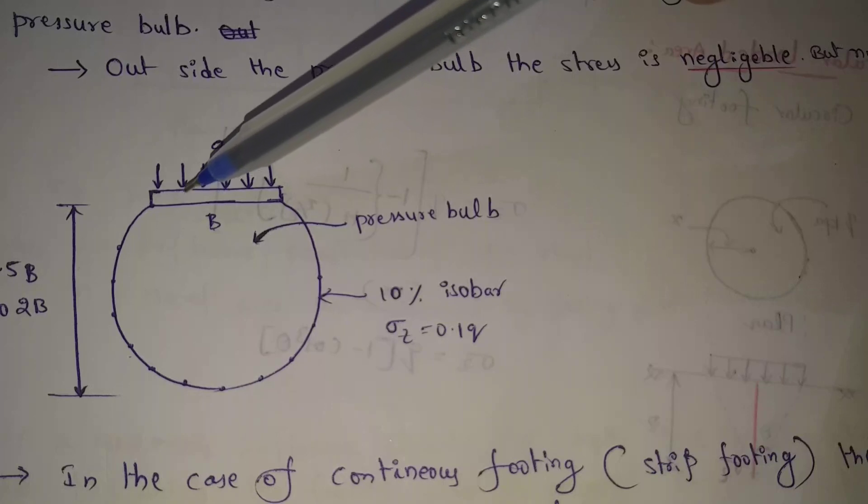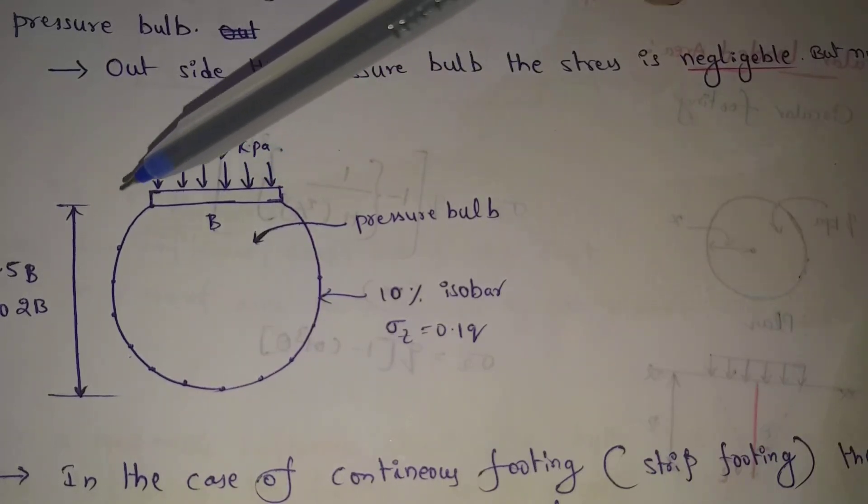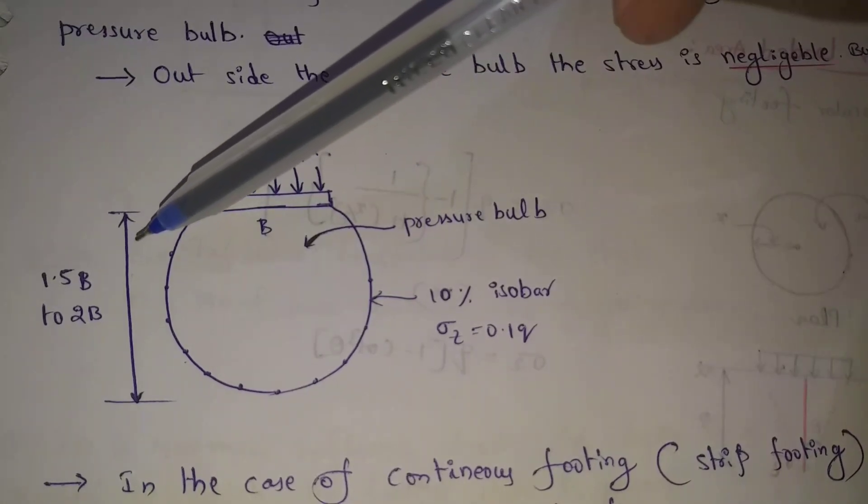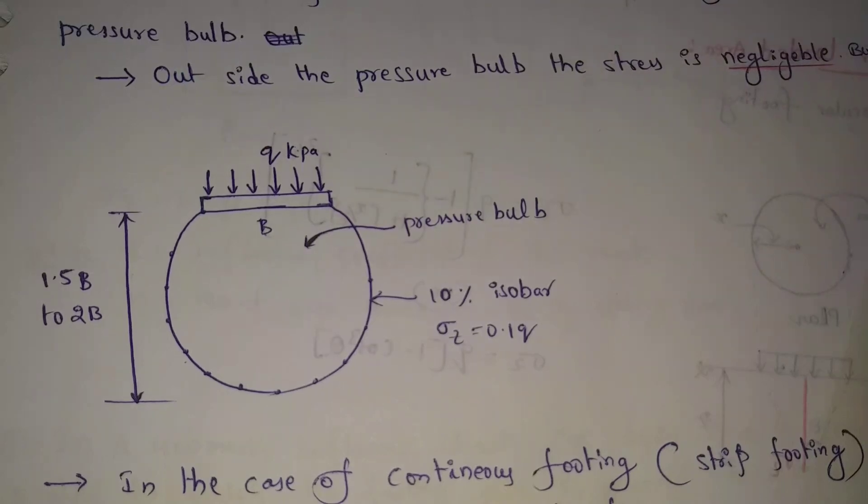For example, this wall is width to B. This pressure ball is depth to nearly 1.5 width to 2 width. This means, this distance is the distance. This depth is the depth. Pressure ball is the depth.